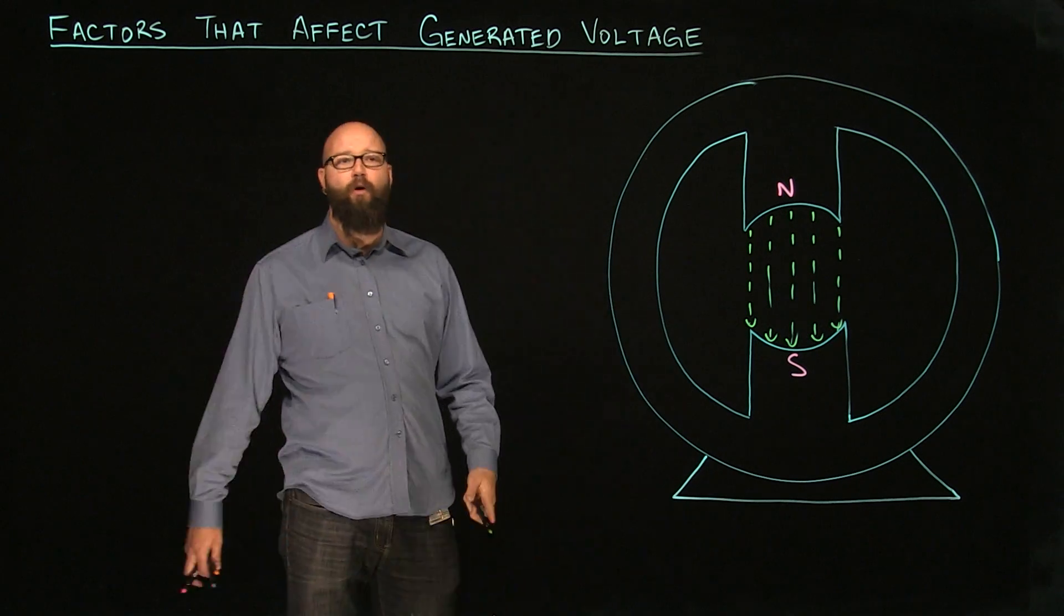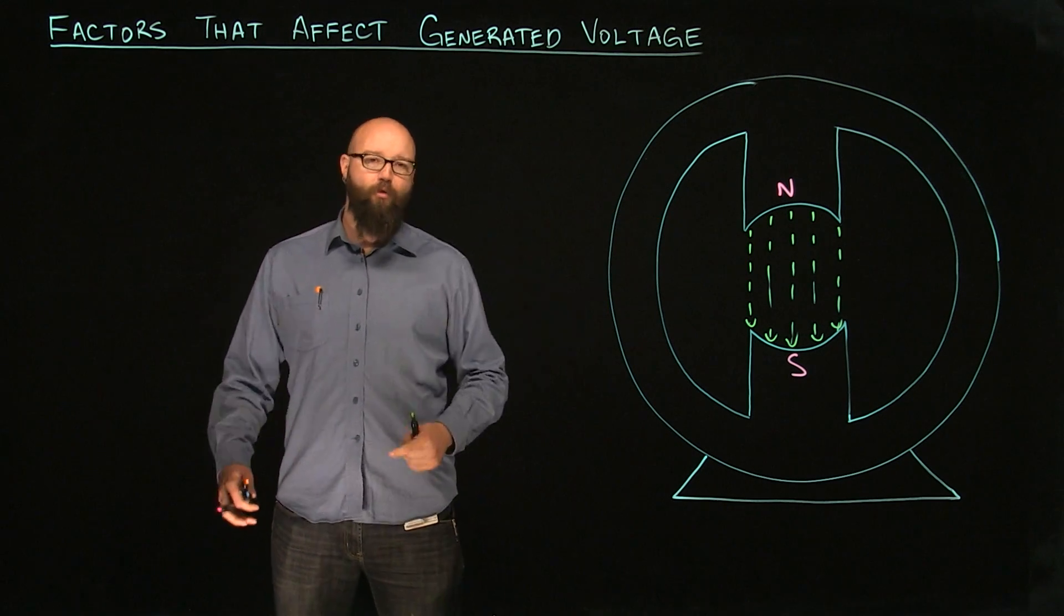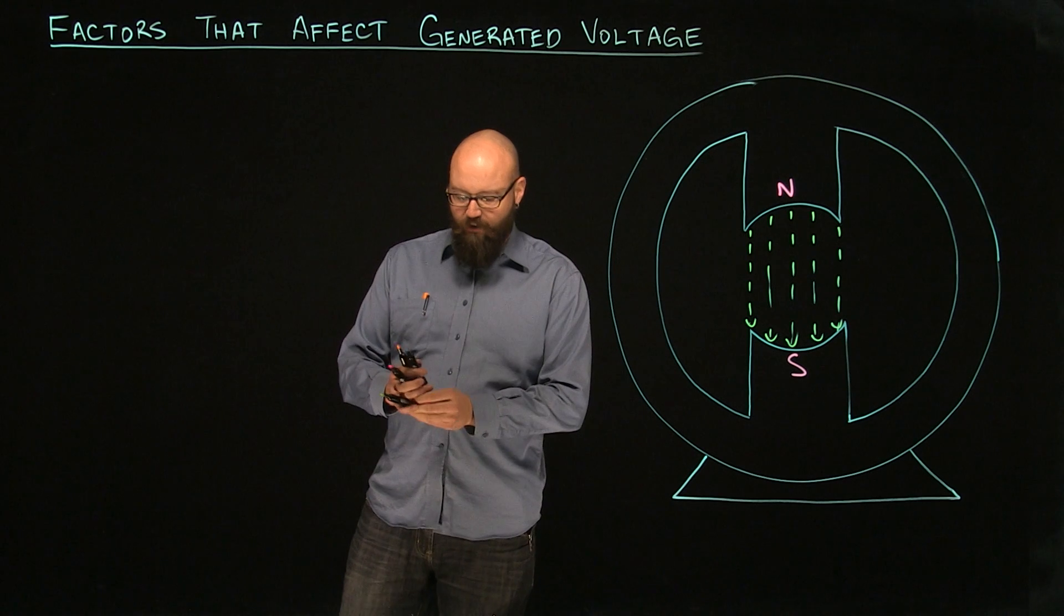And in the previous video, we talked about what happens if we start to move a conductor through a magnetic field. Well, with these two poles, we would get some induced voltage, but not very much. So let's talk about the factors that affect that.